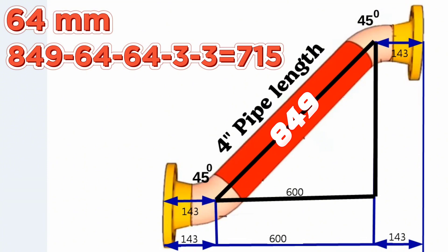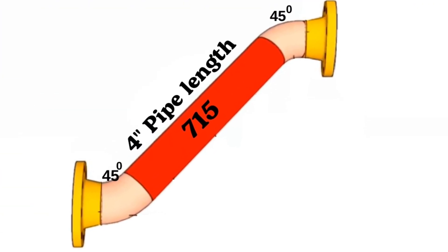At last we calculated and found the length of pipe piece on this 4-inch pipeline is 715 millimeters.